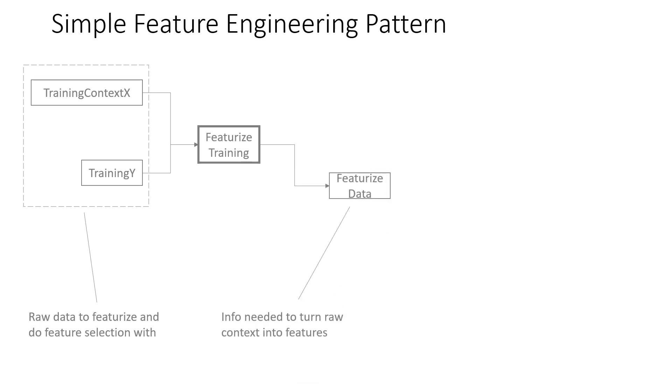And what this outputs is this thing I'm calling featurized data. And now the featurized data is everything you need to turn a new message into a feature vector using whatever process that you use to featurize your training data. This could include things like the words that you selected. So the vocabulary, which n-grams you selected. And not only that, but the index into the feature vector for each word or n-gram.